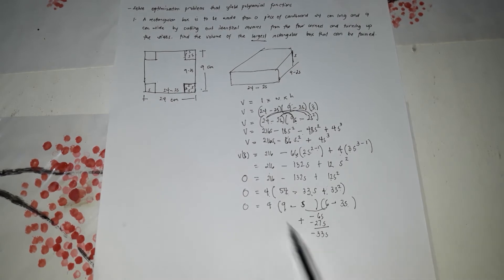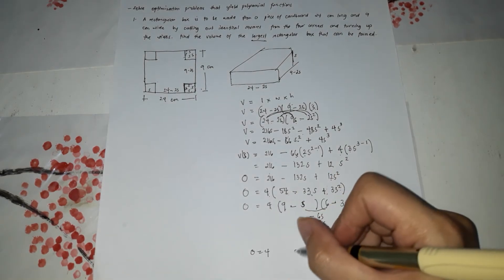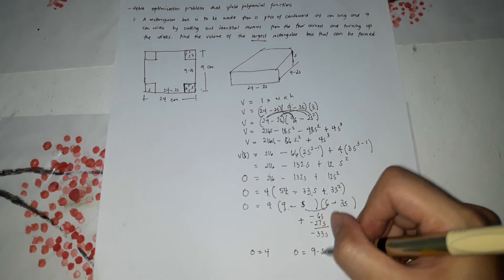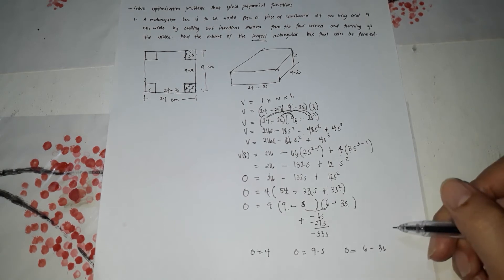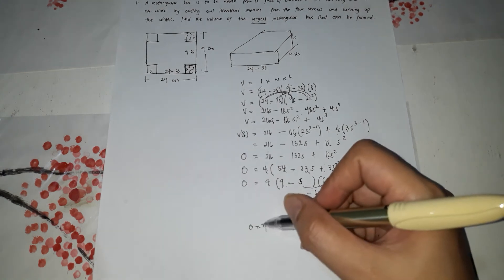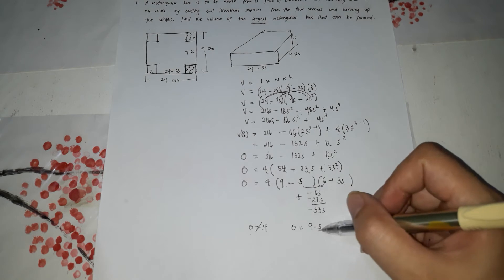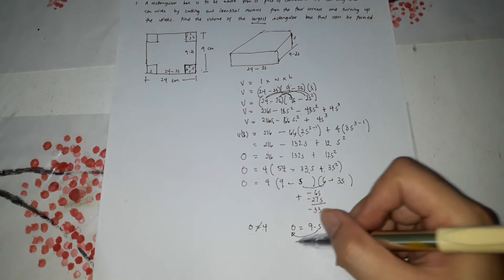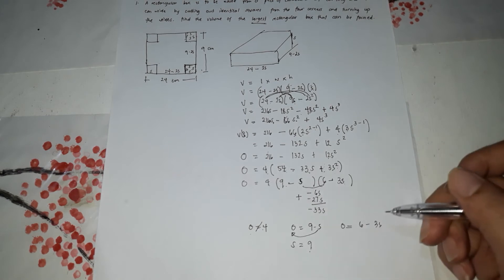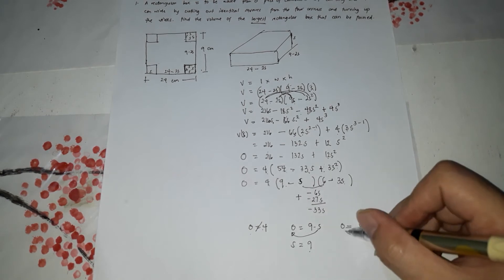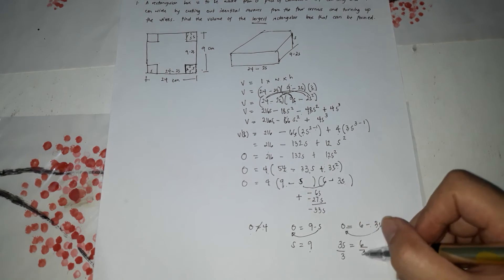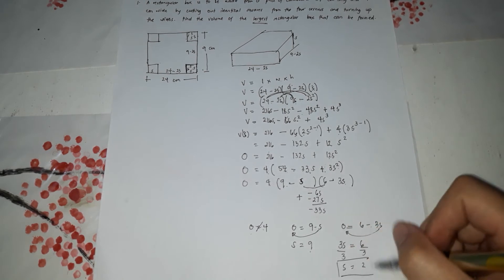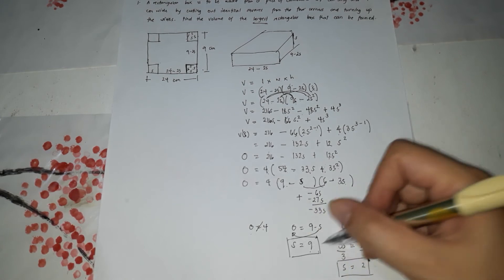Next, after that is we're going to solve for S. So all of these factors equate them to 0. So 0 is equal to 4 for this one. 0 is equal to 9 minus S for this one. And the last factor is 0 is equal to 6 minus 3S. So solve for S. This is not equal because 0 is not equal to 4. So here transpose the S. S is equal to 9. So the first value of S is 9. The second one, transpose the 3S will become positive 6. Divide both sides by 3. S is equal to 2. So this is the second value of S. So the two values are 9 and 2.